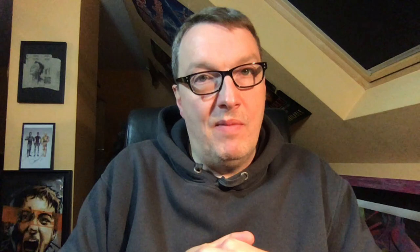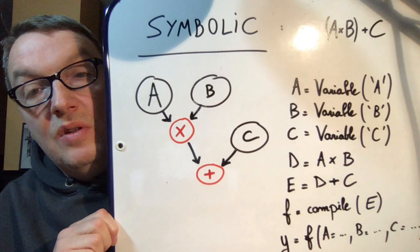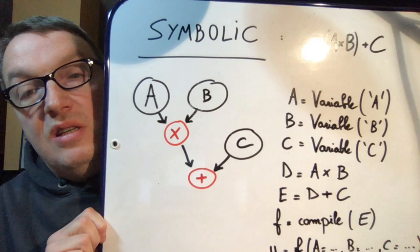For example, if we look at this graph again, we could see that actually D is pretty useless. I mean, sure, we need D to store the result, but that's the only thing it does, and then we use D on the next line for E.